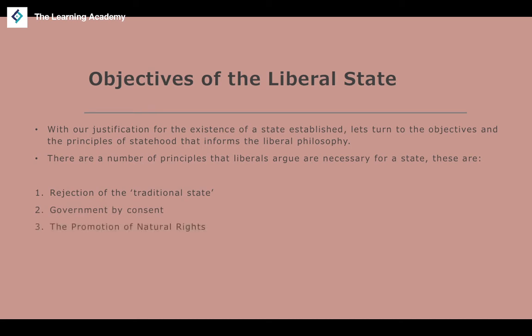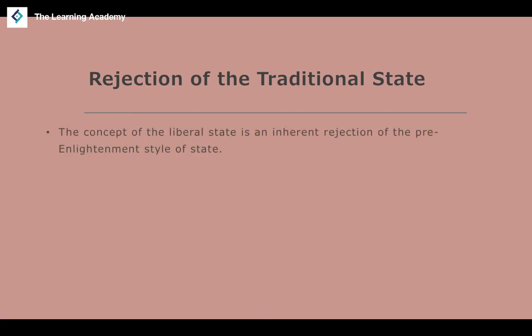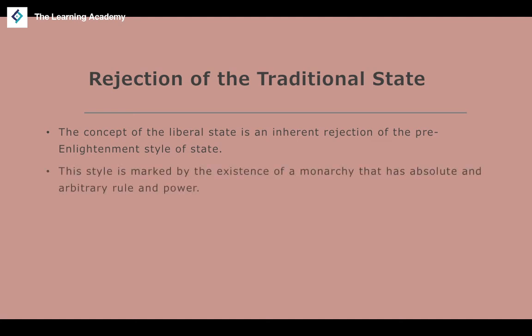The rejection of the traditional state means rejecting the pre-Enlightenment style of government — things like the existence of a monarchy with absolute and arbitrary power. This is the idea of the traditional state that Locke was talking about. The concept of power to the people is very important for liberalism, so any state reminiscent of this traditional understanding where power is centralized in a monarchical system ought to be rejected under the liberal state.